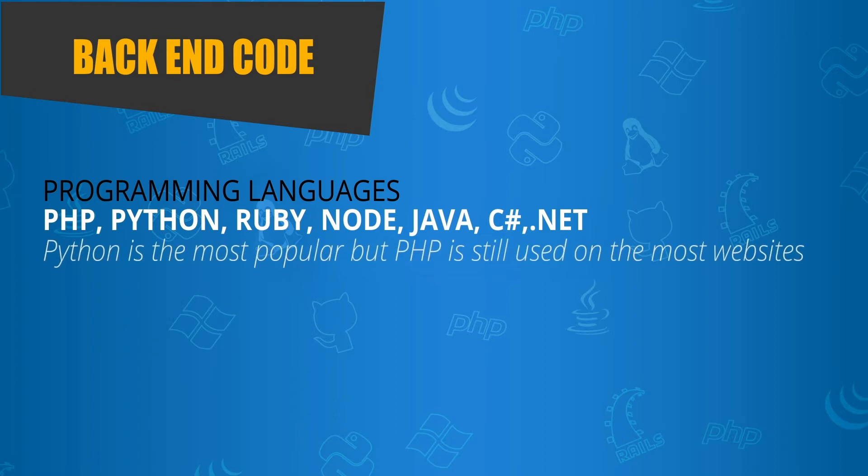Python is the most popular language for a number of reasons, but PHP is still used on most websites today. For example, Facebook was created using PHP, Twitter was created using Ruby and Java, and Instagram was created using Python. So find your specialty, but still learn the other languages. The more you can understand, the better.